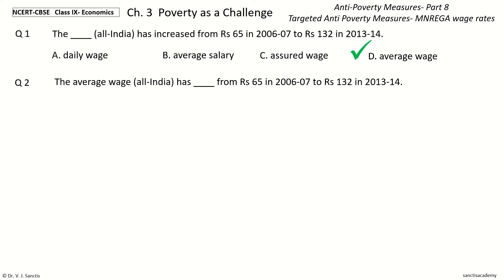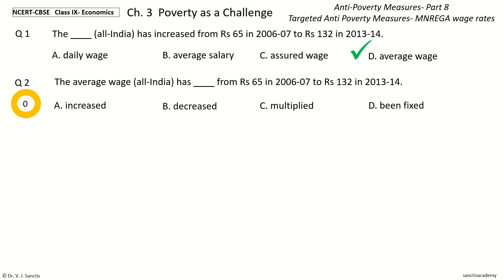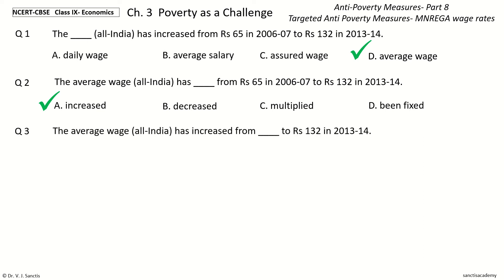Question 2: The Average Wage All India has Dash from Rs. 65 in 2006-2007 to Rs. 132 in 2013-2014. The options are: Increased, Decreased, Multiplied, Been Fixed. The answer is Increased. The Average Wage All India has increased from Rs. 65 in 2006-2007 to Rs. 132 in 2013-2014.